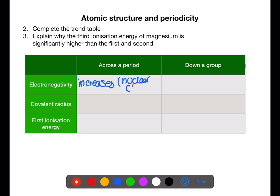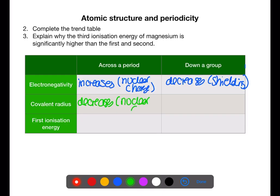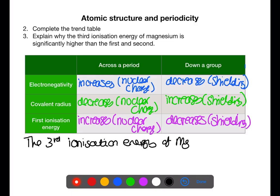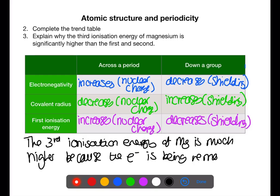The trends in electronegativity are that across a period electronegativity increases, due to increasing nuclear charge. Down a group electronegativity decreases, due to shielding. Across a period covalent radius decreases, due to increasing nuclear charge. Down a group covalent radius increases, due to shielding and the increased number of shells. Across a period first ionization energy increases, due to nuclear charge. Down a group first ionization energy decreases because of shielding. The third ionization energy of magnesium is significantly higher than the first and second because the third electron is being removed from a full shell of electrons.